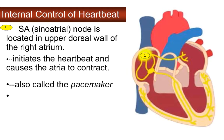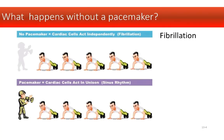The sinoatrial node is called the pacemaker node, and it's in the dorsal wall of the right atrium in the upper area. It initiates each heartbeat and leads to contraction of the atria. If the pacemaker is damaged for one reason or another, you end up with what's called fibrillation. If it's happening in the atria, it's AFib, or atrial fibrillation.